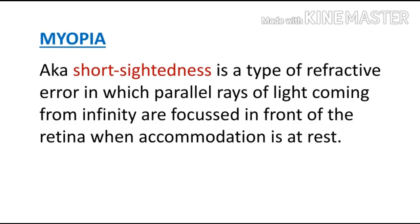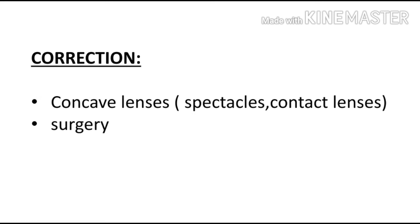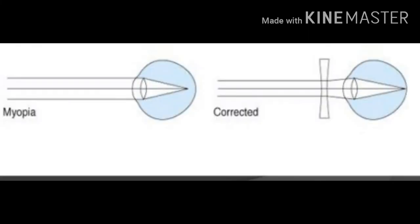Type 1 is myopia, also known as short-sightedness — a type of refractive error in which parallel rays of light coming from infinity are focused in front of the retina when accommodation is at rest. In the first figure, rays focus properly on the retina giving a clear, normal image. In the second figure, rays focus before reaching the retina, causing a blurred image — this is myopia. For correction, we provide a concave lens either as spectacles or contact lenses, which diverges the rays so they focus properly on the retina. Surgery is another correction option.